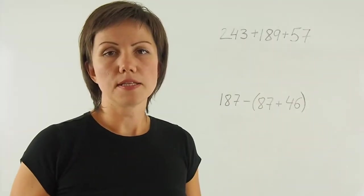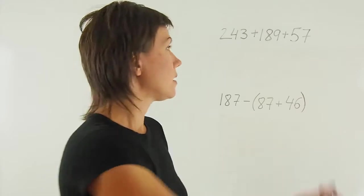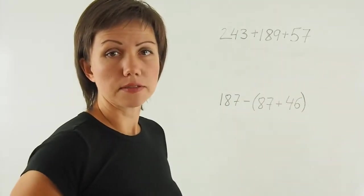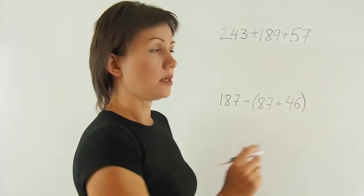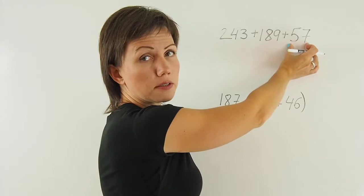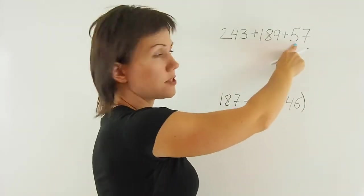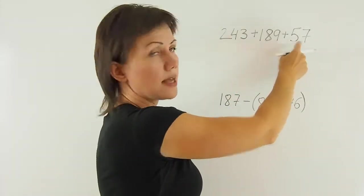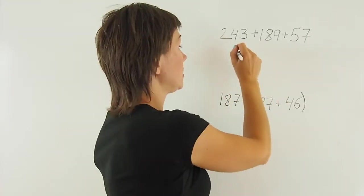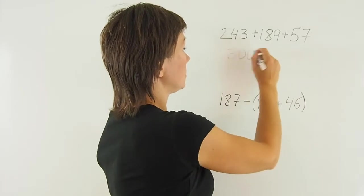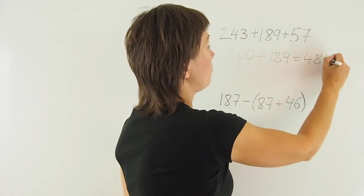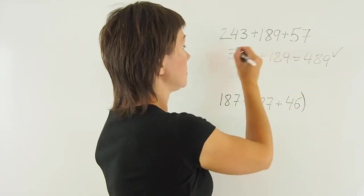Let's see how we can subtract and add numbers using properties. Say I want to add 243, 189 and 57. It makes sense for me to add 243 first and 57. Because 40 plus 50 is 90, 3 plus 7 is 10, 90 plus 10 is 100, and then another 200 makes it 300. And then just add 189. And that gives me 489 together.